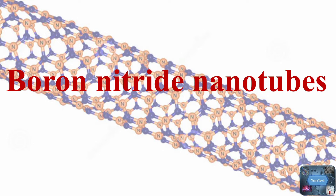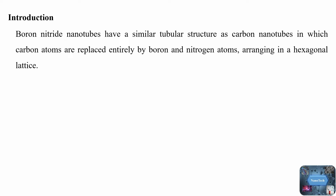Hello all, welcome back to Nanotech. Today's topic is boron nitride nanotubes. Boron nitride nanotubes have a similar tubular structure as carbon nanotubes, in which carbon atoms are replaced entirely by boron and nitrogen atoms arranging in a hexagonal lattice. Boron nitride nanotubes are an excellent insulator with a wide bandgap of 5.5 electron volts.